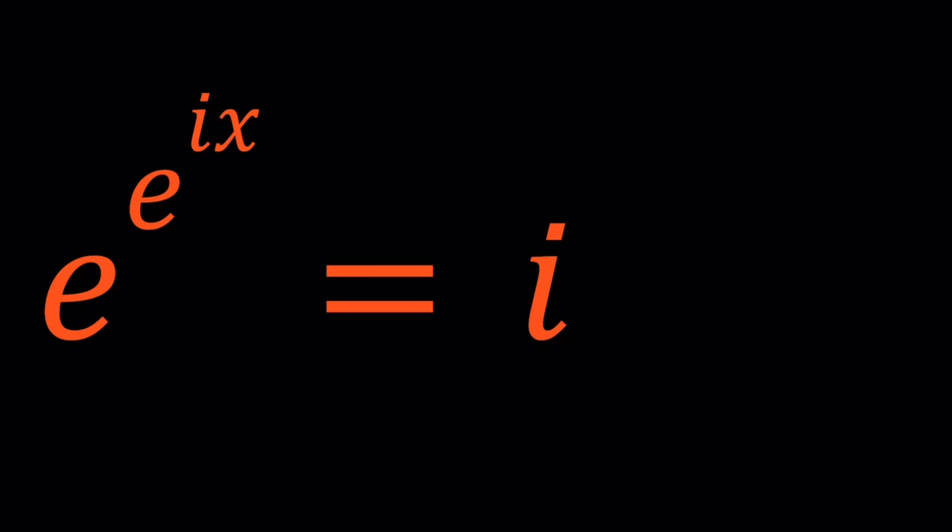So we have e to the power e to the power ix equals i and we're going to be solving for x values. Alright, so let's get started.